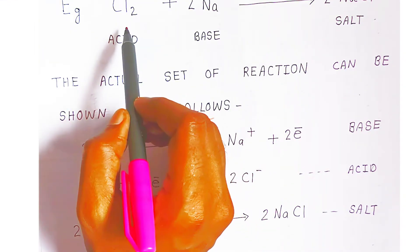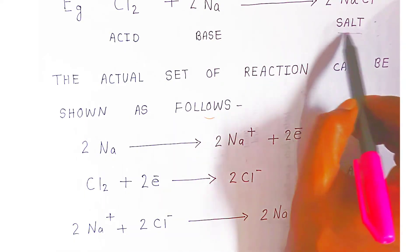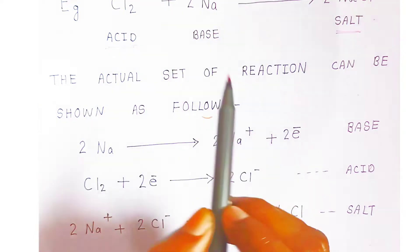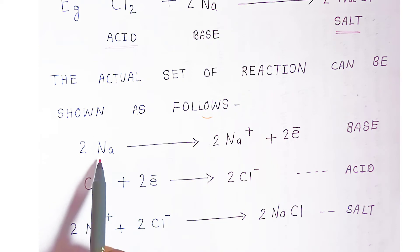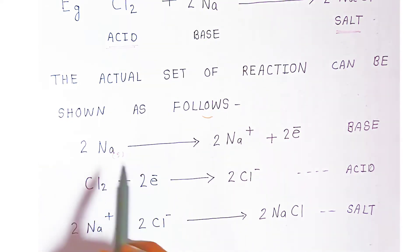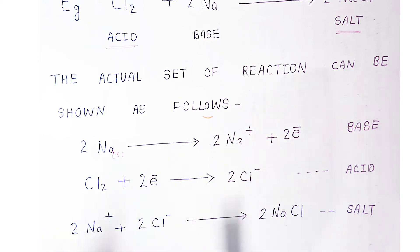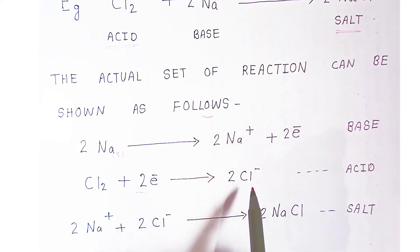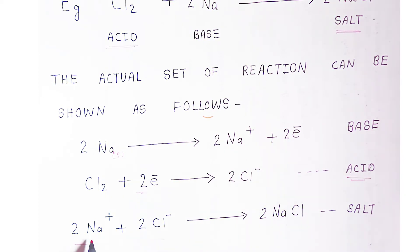For example, chlorine combines with sodium. Here chlorine acts as an acid and sodium acts as a base, forming a salt. Sodium metal gives out electrons — it acts as a base. Chlorine accepts these two electrons and forms chloride ions. You get sodium cations and chloride ions — so chlorine is the acid. This is the net reaction.